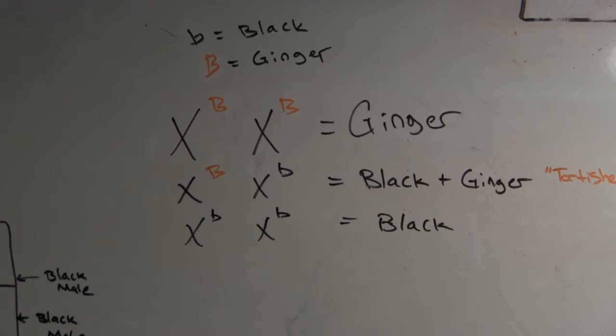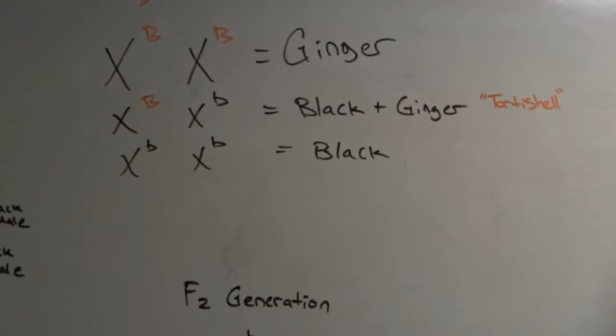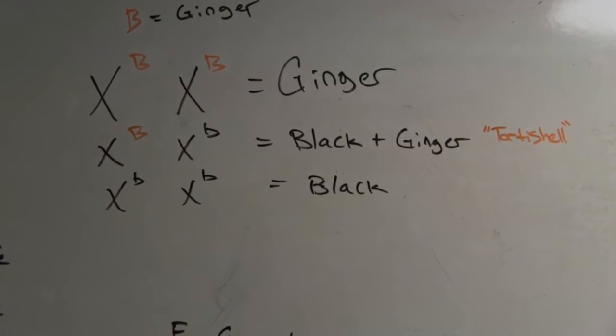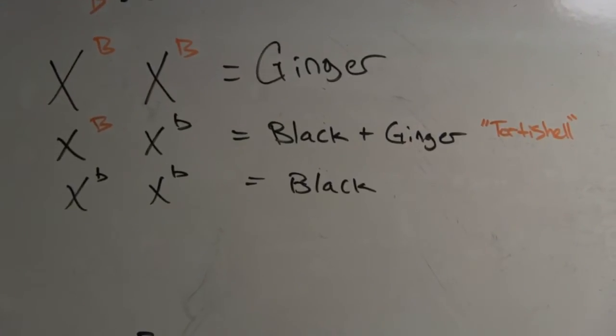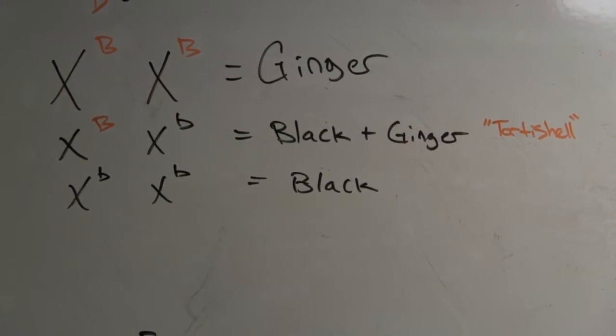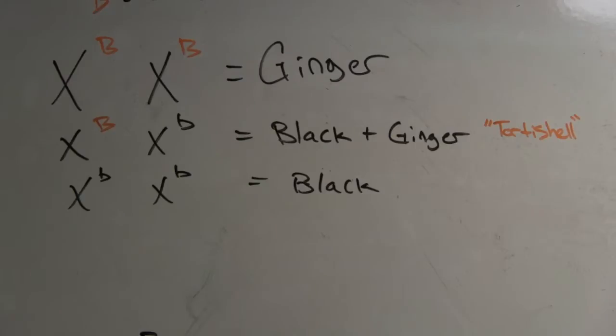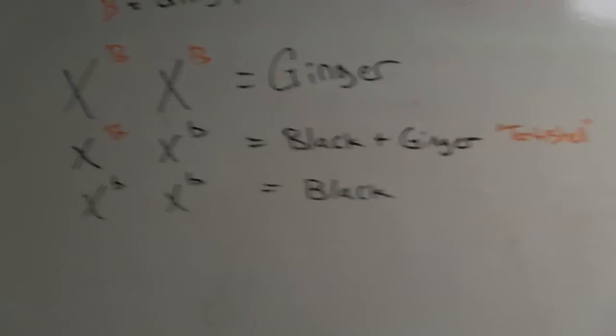So for females, you see, you only have your X chromosomes. You don't have any Y chromosomes here. You have X uppercase B, X uppercase B stands for ginger. X uppercase B, X lowercase b stands for, sorry, let's go to the third one. X lowercase b, X lowercase b stands for black. And X uppercase B, X lowercase b stands for black and ginger, or what's called tortoiseshell.